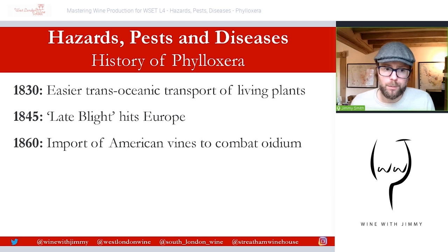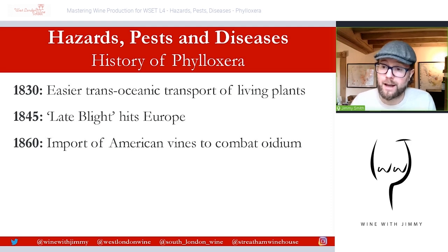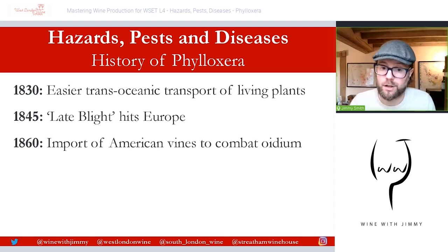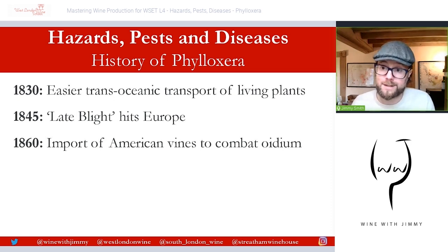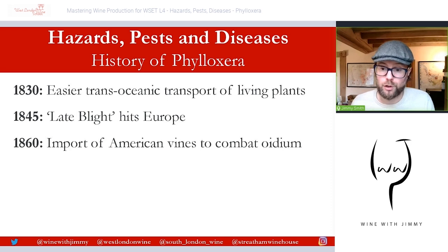Around 1860, there began a general import of American vines to combat oidium. It was another way to protect vines if sulfur was not readily available, though it was not a mass import at this point. But this is the first stage of American vines coming quickly across the Atlantic and landing in France — and of course this opened the door for phylloxera.